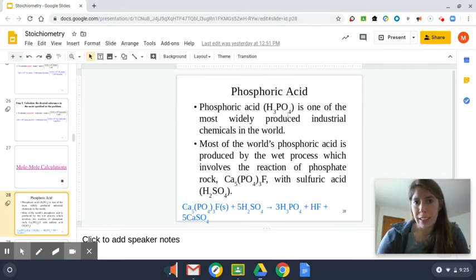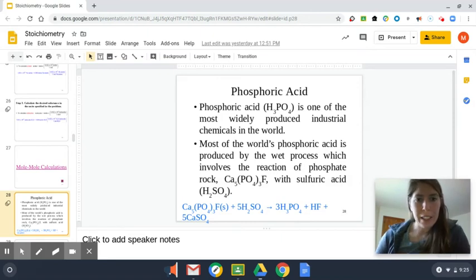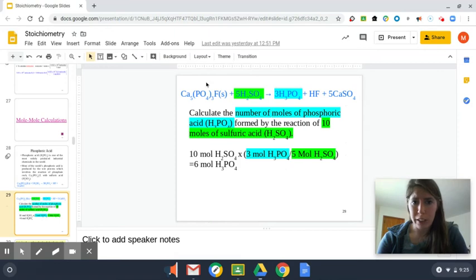So phosphoric acid is one of the most widely produced industrial chemicals in the world. It's useful in lab settings, cleaning settings, so it's got a big industrial lifespan. Most of our phosphoric acid is produced by wet process, which involves the reaction of phosphate rock with sulfuric acid. Right here is our chemical equation. It is balanced.